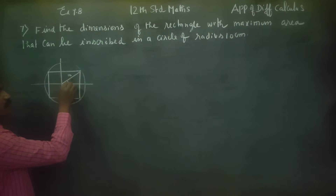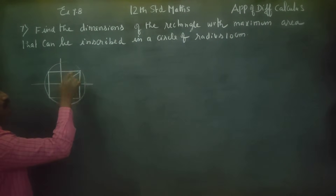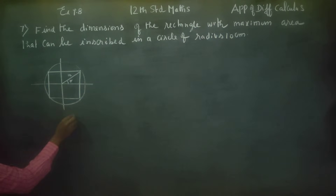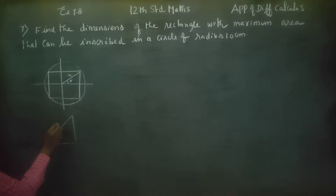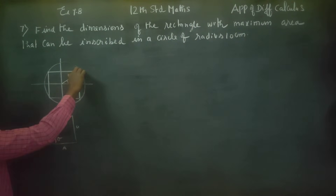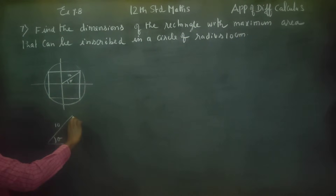This angle is theta, and we are working in the first quadrant. The hypotenuse is 10. We have the opposite side and the adjacent side — the opposite side corresponds to the y-coordinate and the adjacent side corresponds to the x-coordinate.